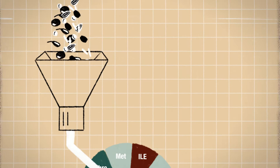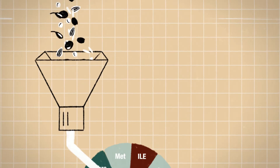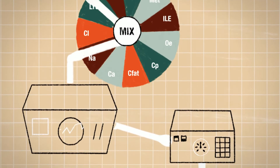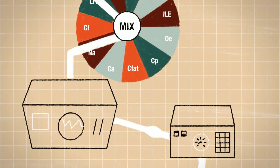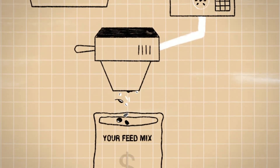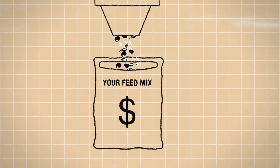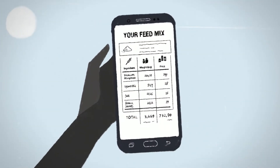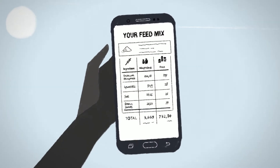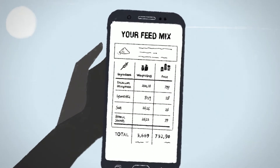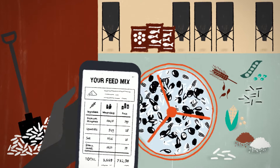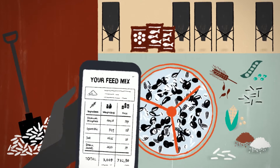Using scientific formulas based on up-to-date feed quality norms, the app will calculate the best recipe at the most affordable price. Now Henry can use the generated shopping list to buy exact quantities of each ingredient and mix them together for a high quality feed.